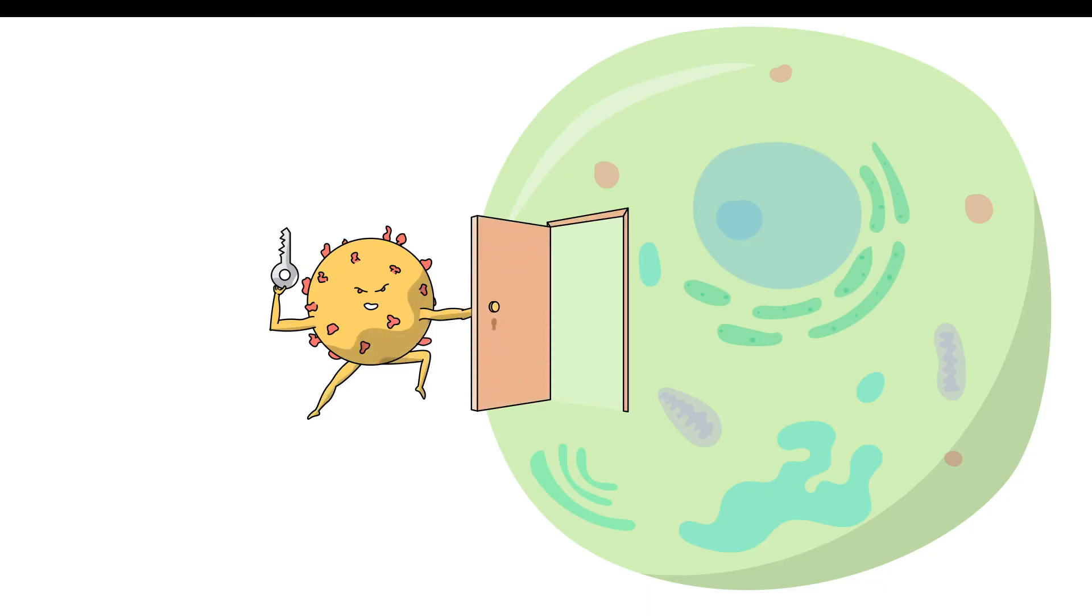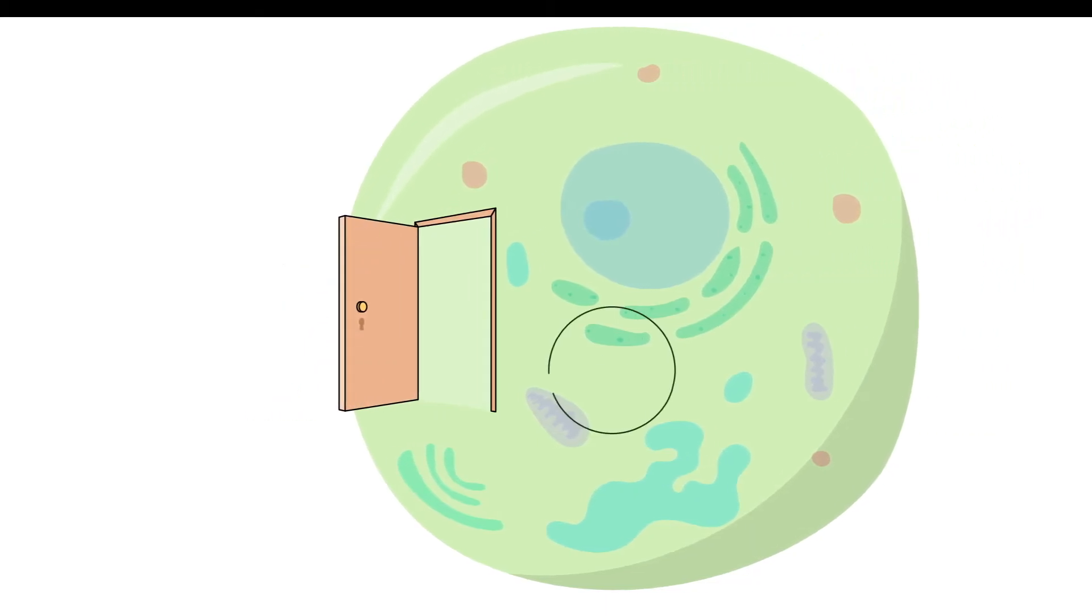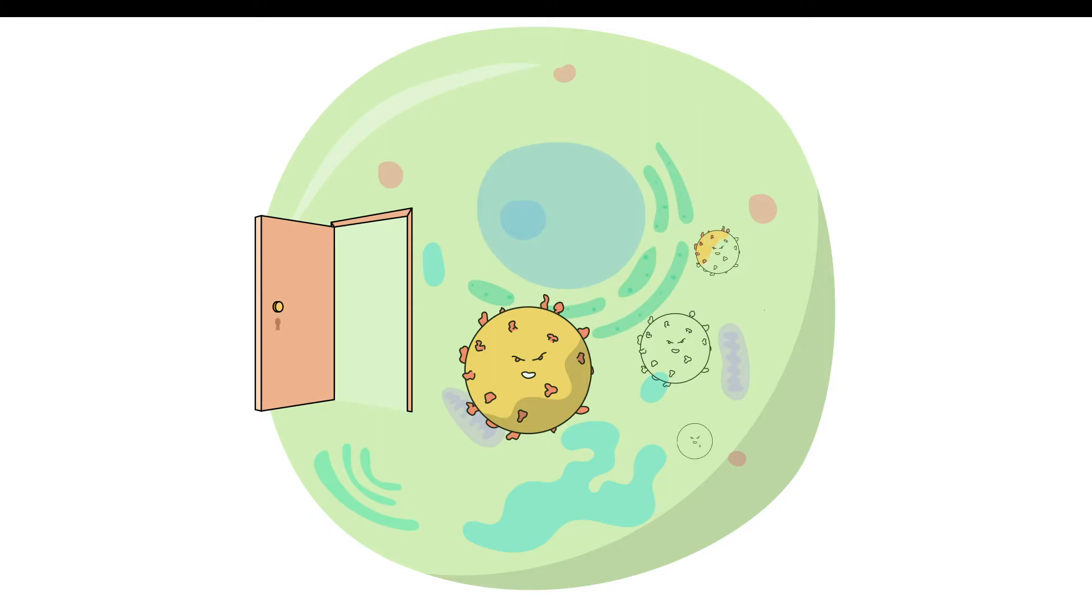Like similar viruses, Reovirus is highly skillful at getting past our cell's defenses. Its goal is to break through the plasma membrane of host cells and initiate replication once inside.